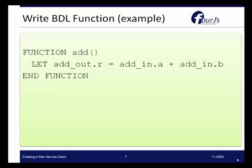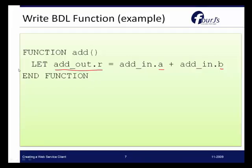Looking at our example, we've created the calculator server service. We've created a function called add, and in this function we're going to utilize our A and B integers defined in our record, simply add those together, and provide that information into the add-out record. So when the client requests to use this service and calls the add function, this is the operation that will be performed.